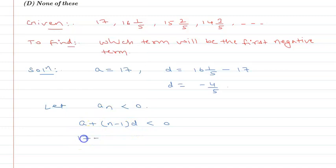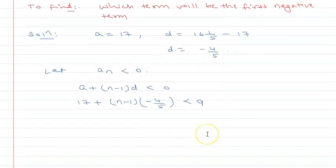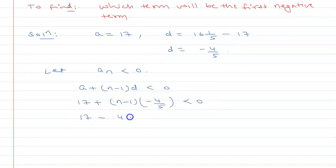So, 17 plus (n-1) times minus 4/5 is less than 0. This becomes 17 minus 4n/5 plus 4/5 is less than 0. Rearranging, 17 plus 4/5 is less than 4n/5.